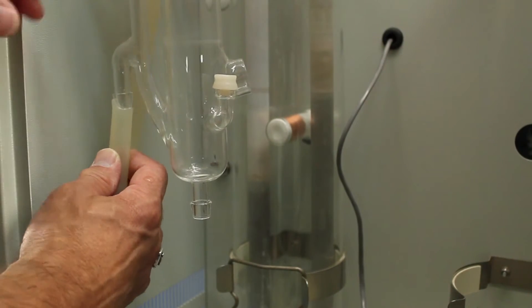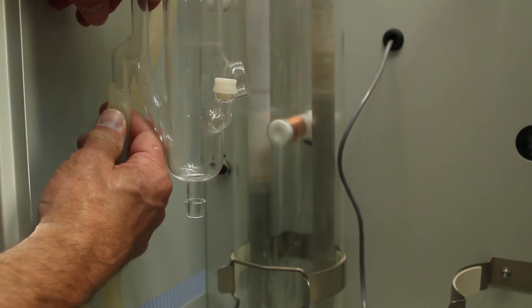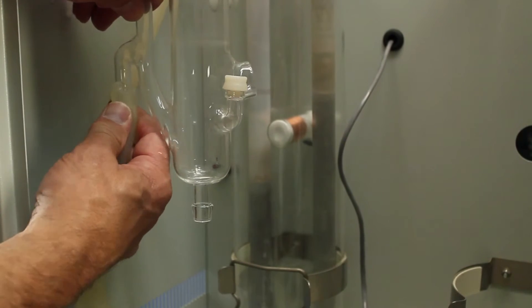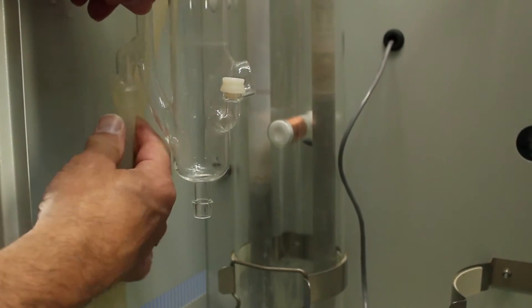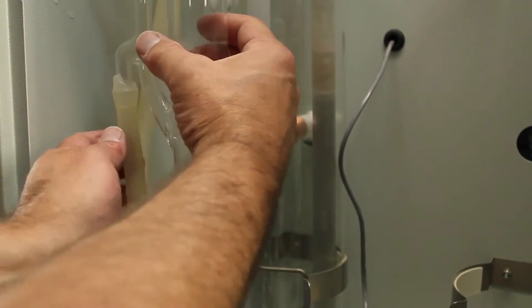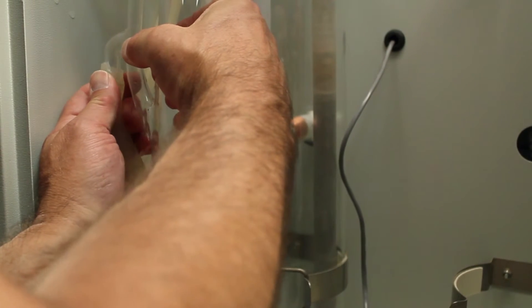Now that we have the constant level device back onto the condenser, we're going to reattach our tubing. Sometimes you can use a little bit of water to make this a little easier to slide that tube up inside.